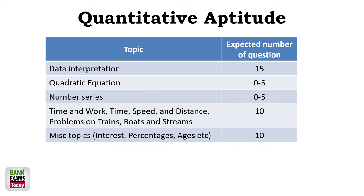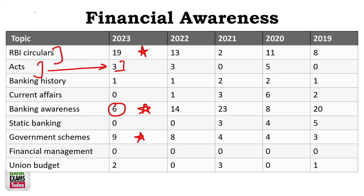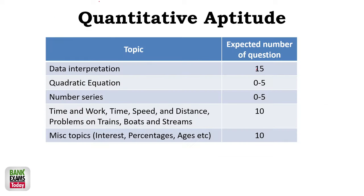In the quantitative aptitude, data interpretation holds the most weightage. This is your target, 20 is your target in quant. You have a target of let's say 20. How to achieve that 20 marks? Basically, you are trying to achieve 15 out of 15 in data interpretation.